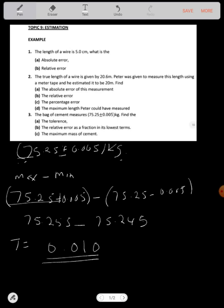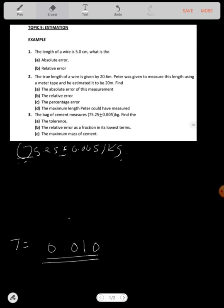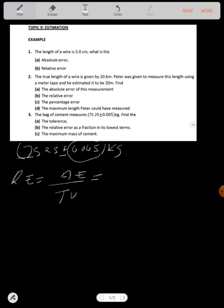Find the relative error as a fraction in its lowest terms. The relative error is equal to absolute error over true value. In this case, your absolute error is 0.005 over true value, which is 75.25. Now as a fraction, what can we do to eliminate 5 there? We have to multiply by 1000 on top and by 1000 on the bottom.